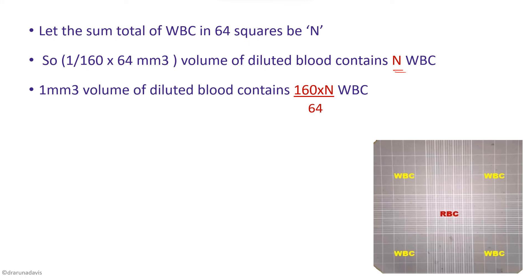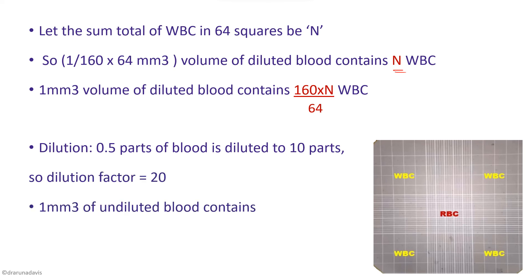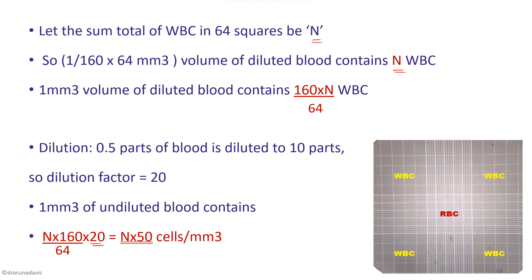Since the dilution is 0.5 in 10 parts, the dilution factor is 20. So 1 mm³ of undiluted blood will contain N/60 × 64 × 20, which simplifies to N × 50. This is how you write the calculations in the answer sheet. Since we are not finding the actual N value in the exam, you substitute it as N and write the derivation. If the examiner asks you to count, you will count; otherwise, just write the derivations.